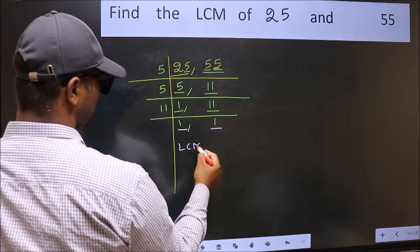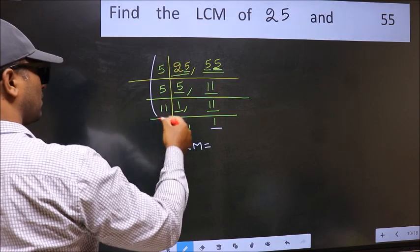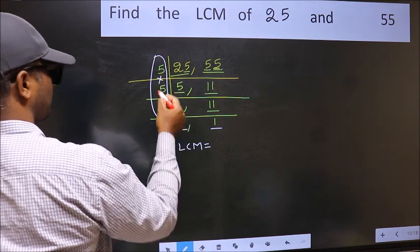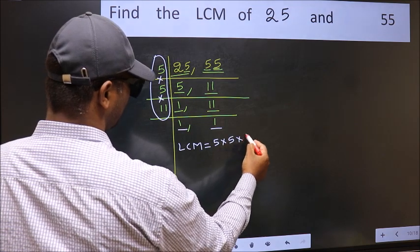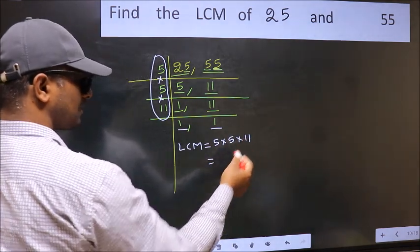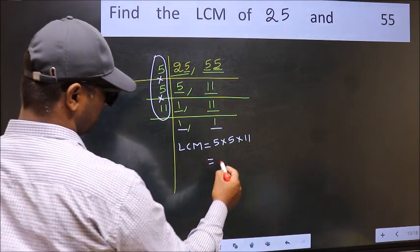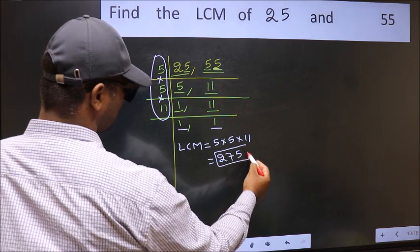So our LCM is the product of these numbers. That is 5 times 5 times 11. When we multiply these numbers, we get 275 as our LCM.